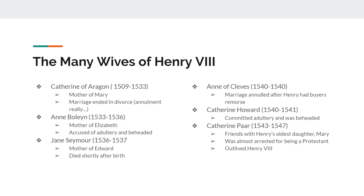Catherine Howard — he marries her in 1540 and they're married until 1541. She actually does commit adultery and she's beheaded for it. And then finally there's Catherine Parr, who is going to be married to Henry from 1543 until 1547. Our best evidence is that Catherine and Henry actually did like each other — they probably even loved each other. Catherine meets Henry through his oldest daughter. However, towards the end of their marriage, Henry starts to have suspicions about Catherine and almost has her arrested, until Catherine talks him out of it. Catherine is going to actually outlive Henry — Henry VIII dies in 1547, but she continues living for another roughly 15 years.